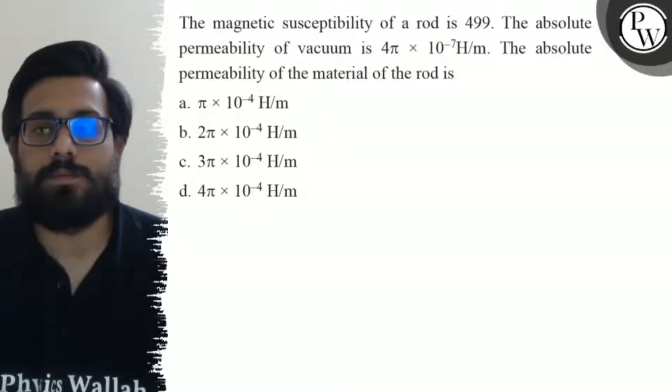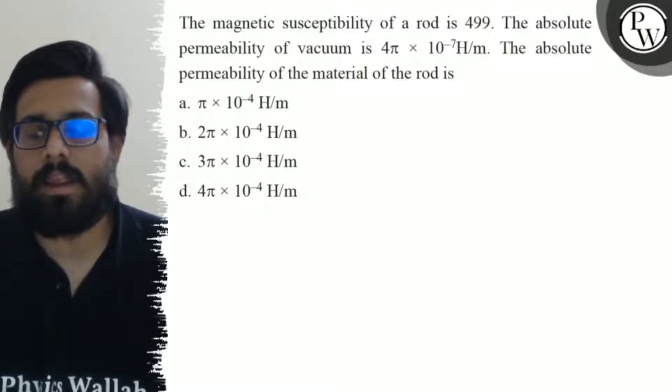The magnetic susceptibility of a rod is 499. The absolute permeability of vacuum is 4π × 10^-7 henry per meter.